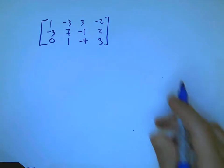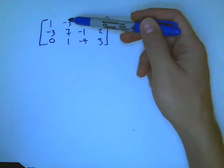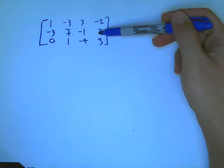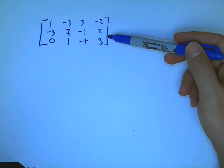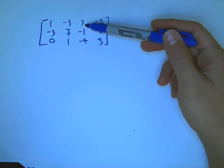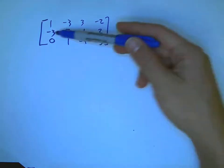And the proof, using our technology, is that we know whatever happens with the reduction process that I'm about to do, there can be at most three pivots, because there's only three rows, and so there must be a free column.